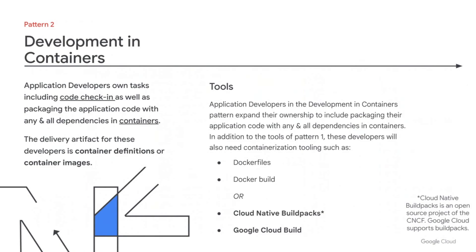But Docker's tools are not the only options these days. The tools in bold here are things that Google Cloud could help you with. Cloud Native Buildpacks is an open source project of the Cloud Native Computing Foundation, and it allows you to — and I quote from their website — 'transform your application source code into images that can run on any cloud.' Google Cloud supports Cloud Native Buildpacks, meaning we have provided tooling to help developers containerize their applications. Google Cloud also has a tool called Google Cloud Build, which you can use to build a container image and other things like Java archives to be stored in a registry like Google Cloud's Artifact Registry.